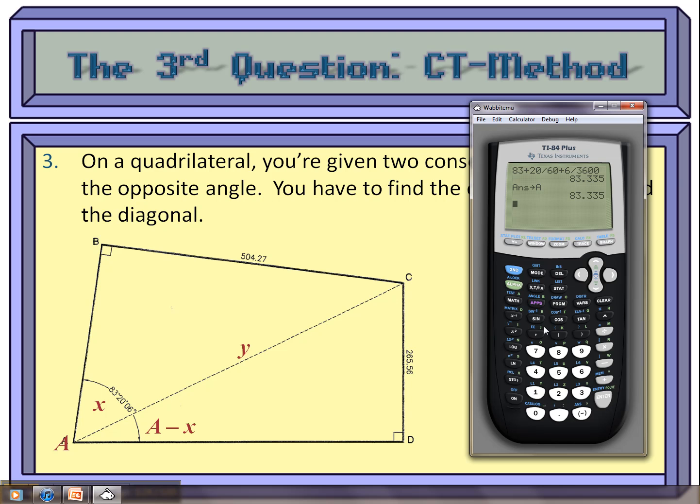Now I could have gone up into the angle menu, second angle, and used the degrees after the 83, the minute symbol after the 20, and then after the 6 you have to hit alpha plus sign for the seconds. But I found that it's faster to actually just type it in by hand like that because you don't have to go back and forth through menus. And then let's make sure this mode is set to degrees, and it is.